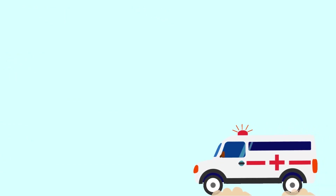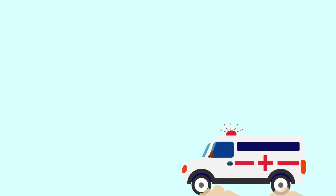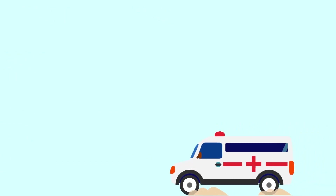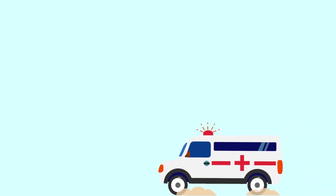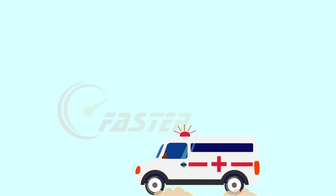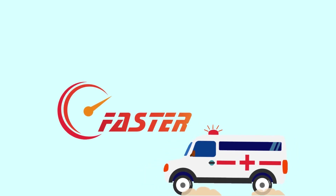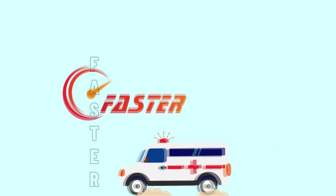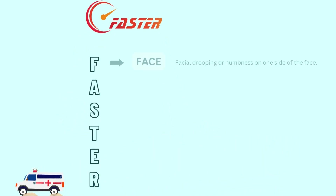The clinical presentation of stroke varies from patient to patient, but certain signs make it easily distinguishable. Here is a mnemonic — FASTER — in which F is for face: facial drooping or numbness on one side of the face.